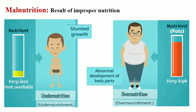Malnutrition: Improper nutrition results in malnutrition. If a particular nutrient is very less or not available for a longer time, then it leads to under-nutrition or under-nourishment. Likewise, getting too much of nutrients causes over-nutrition or over-nourishment. Both under-nutrition and over-nutrition are malnutrition, because over-nutrition causes abnormal development of body parts and under-nutrition may cause stunted growth and similar problems. So, having a balanced diet is very important.